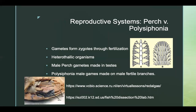Comparing the two reproductive systems: they are similar in that they both require a male gamete to combine with a female gamete for fertilization. They are also both heterothallic organisms — both the perch and Polysiphonia need two individuals to perform sexual reproduction, unlike homothallic organisms which can reproduce by themselves. They differ in structure: male gametes in the perch are made in the testes, whereas male gametes of Polysiphonia are made on male fertile branches.